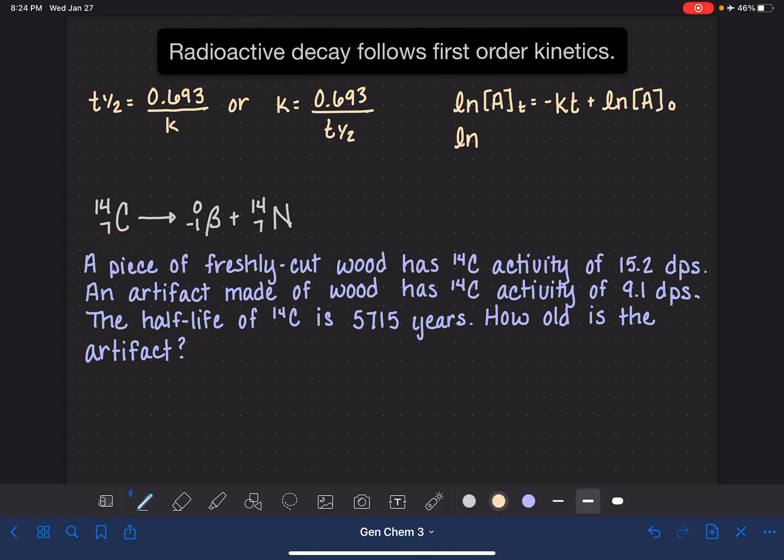So normally, when we're doing a radioactive decay calculation, we're actually going to use the symbol N, which stands for nuclei. So the natural log of the number of nuclei at time t is equal to negative kt plus the natural log of however many nuclei we have at the start of the reaction.